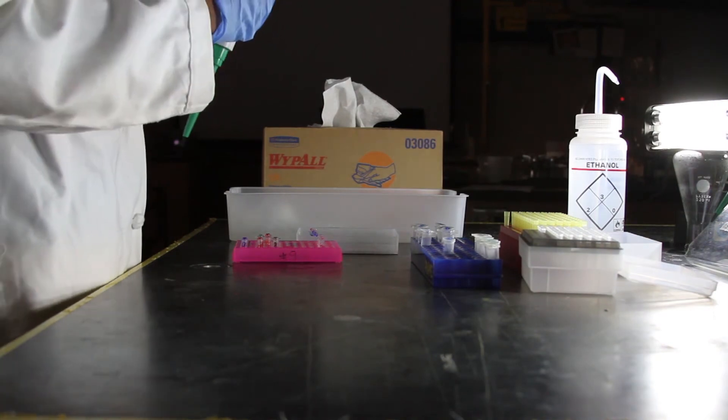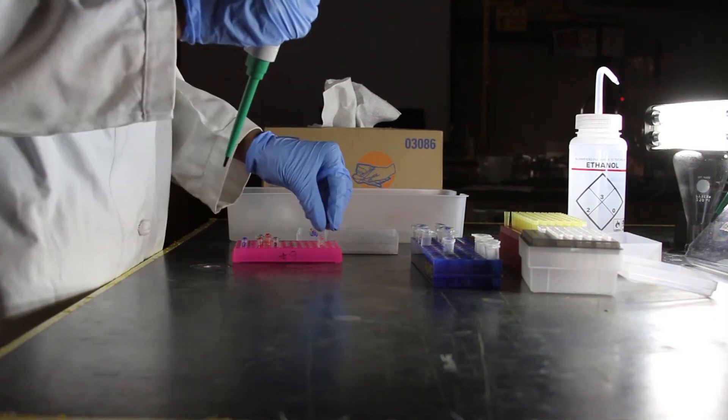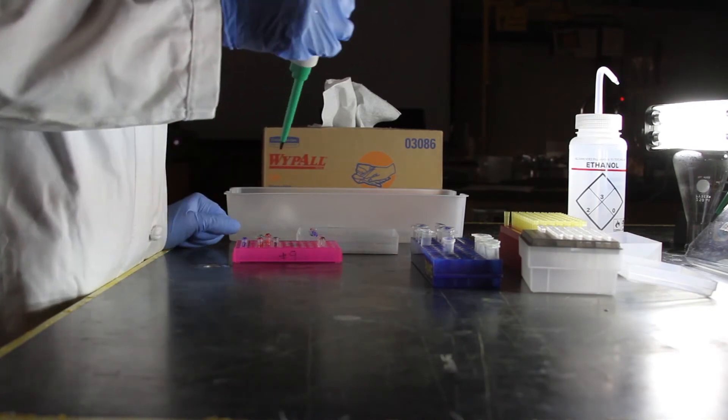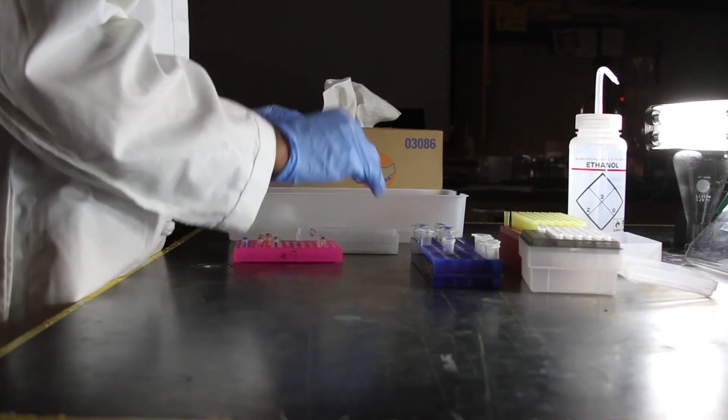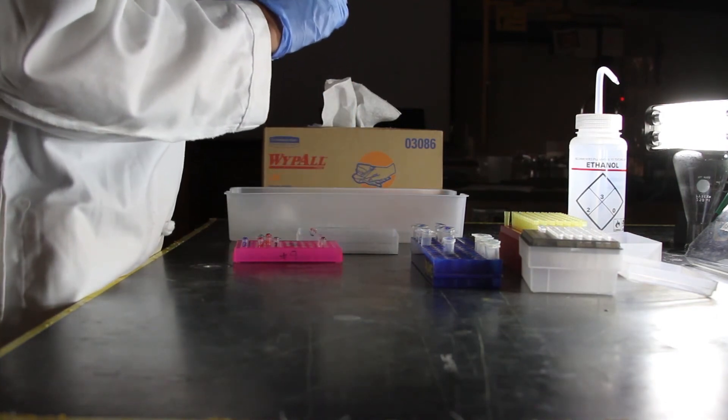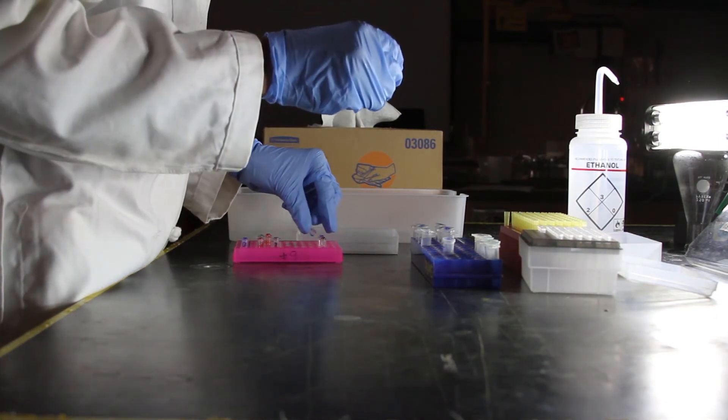Spin the samples for 5 seconds in a microcentrifuge or flick them to collect all of the mixtures to the bottom of the tube. Incubate the restriction digest at 37 degrees Celsius for 30 minutes, then 80 degrees Celsius for 20 minutes.